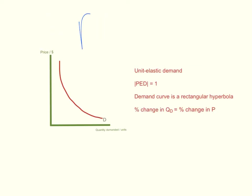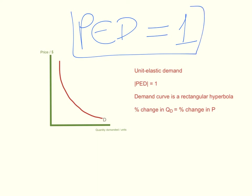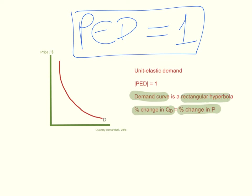When the absolute value of price elasticity of demand is equal to 1, this happens when the percentage change in quantity demanded is equal to the percentage change in price. So when you divide both percentages by each other, they equal 1. In that case, the demand curve is a rectangular hyperbola, and economists would say that this product has unit elastic demand — the price elasticity of demand would equal 1.